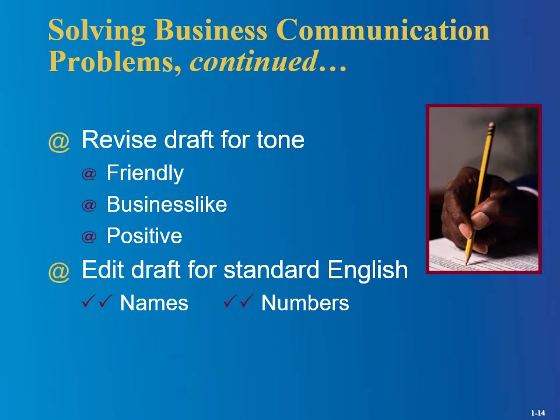Edit the draft for standard English — names and numbers. Names are tricky because the spelling can be tough, and there's nothing worse than getting an email or letter where someone calls you by the wrong name, so it's probably worth checking that twice. Numbers are highlighted because in a business situation, if you miss a zero and say it's $150 instead of $1,500, that's a pretty big deal — so maybe it is worth double-checking those.